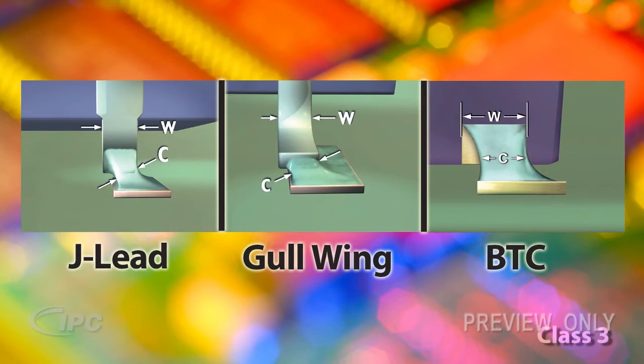The width of a J-lead, Gullwing, or BTC solder joint at its narrowest point also needs to be at least 75% of the lead or termination width.